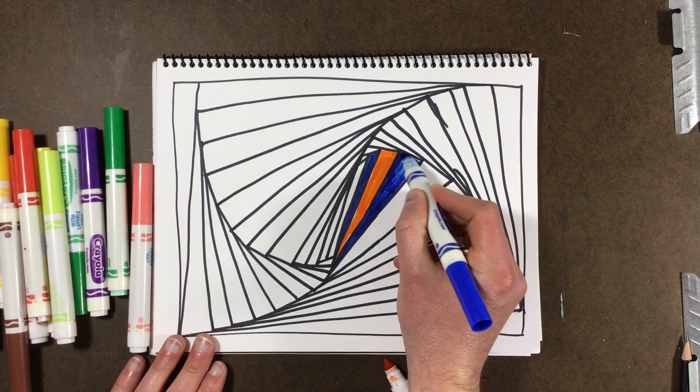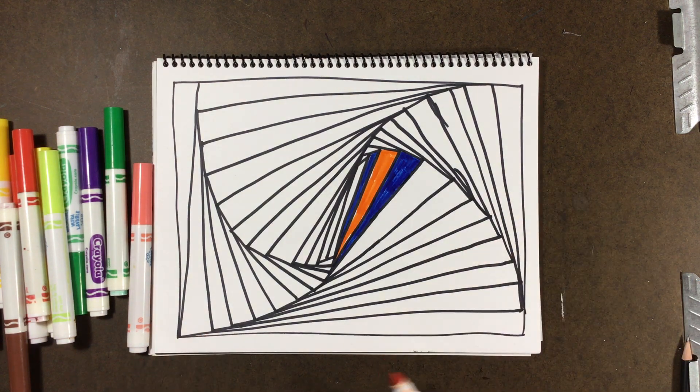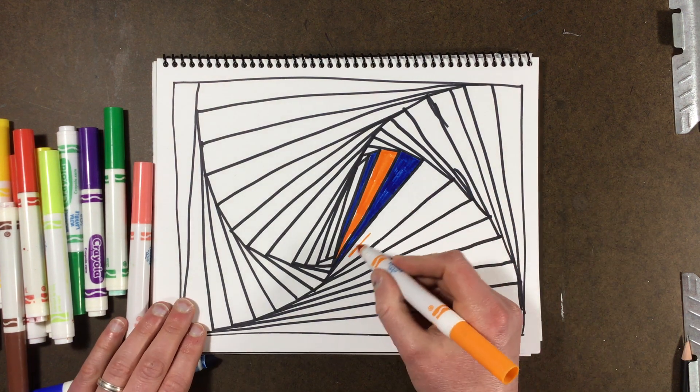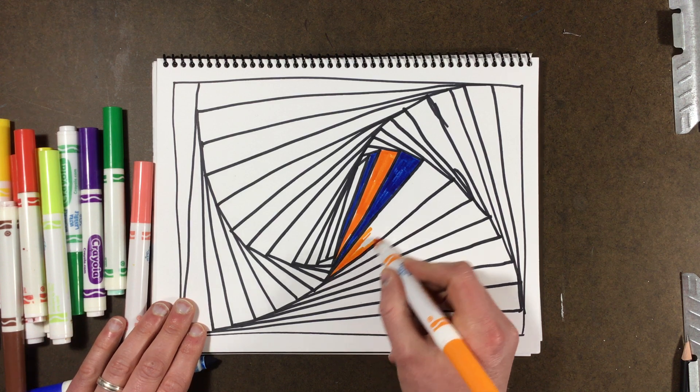Make sure you stay in the lines. Op art often really needs clear, crisp colors to get that illusion of movement on a piece of paper.